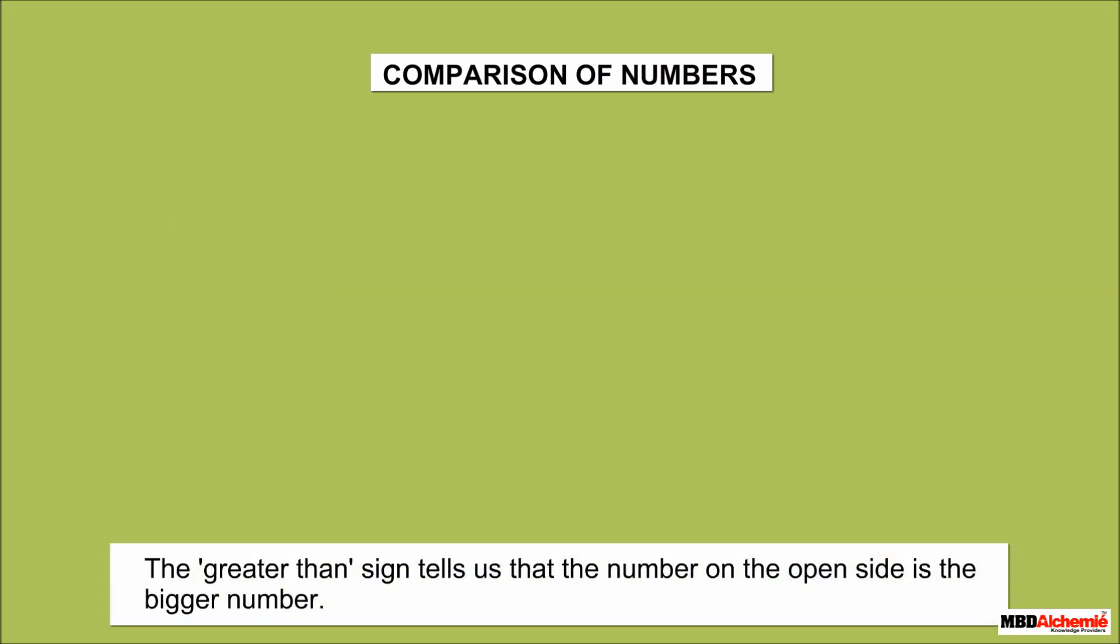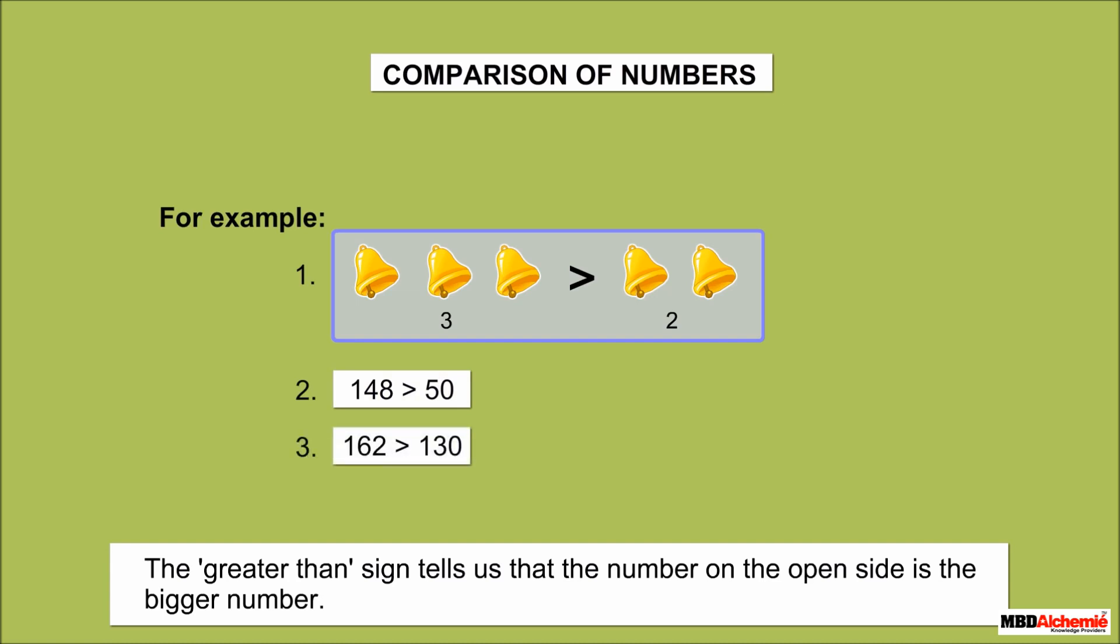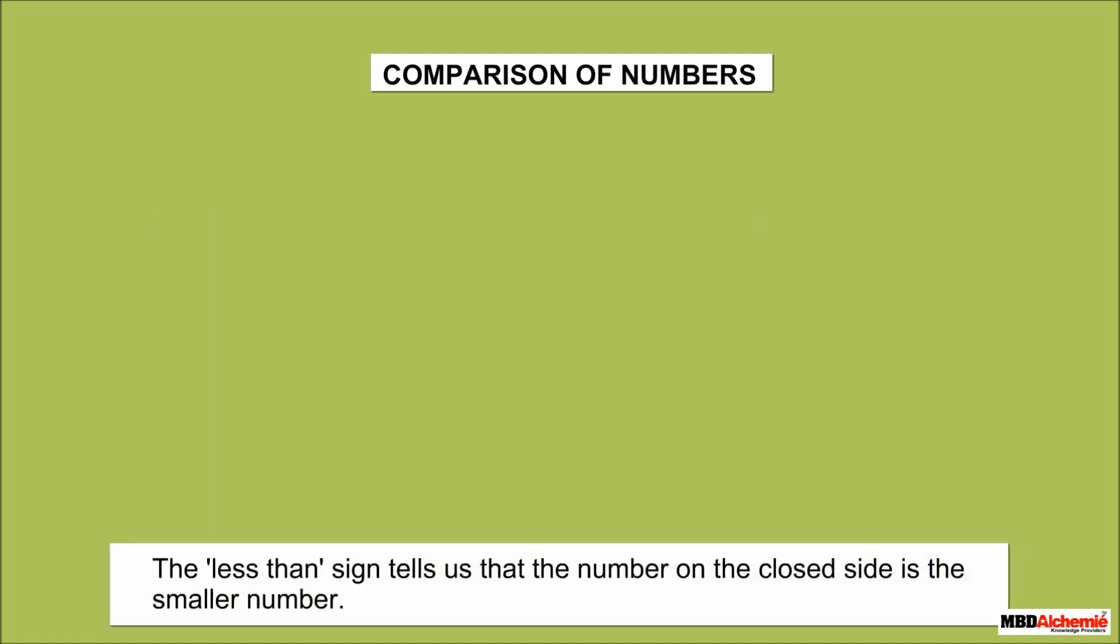The greater than sign tells us that the number on the open side is the bigger number. For example, 3 is greater than 2, 148 is greater than 50, 162 is greater than 130, 154 is greater than 152.